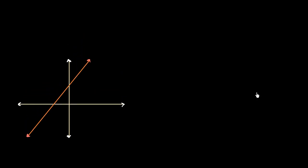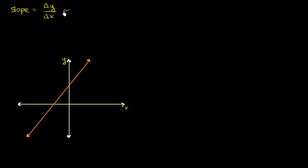We tend to be told in algebra class that if we have a line, our line will have a constant rate of change of y with respect to x. Another way of thinking about it is that a line will have a constant inclination, or a constant slope. Our slope is literally defined as your change in y — this triangle is the Greek letter delta, a shorthand for 'change in' — change in y over change in x. And if you're dealing with a line, this is constant.